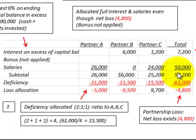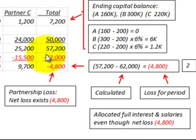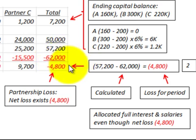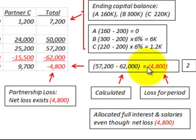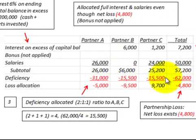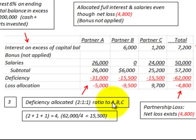The total allocated amount under this method is $57,200 — interest of $7,200 plus salaries of $50,000. Since the net loss for the period was $4,800, we determine the total deficiency by adding $4,800 to $57,200, giving $62,000. This $62,000 is the deficiency we must allocate, using the same 2:1:1 ratio for Partners A, B, and C.